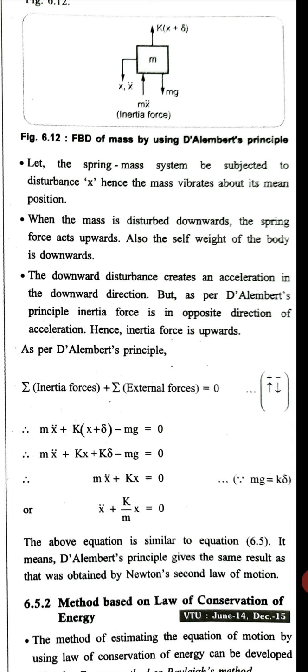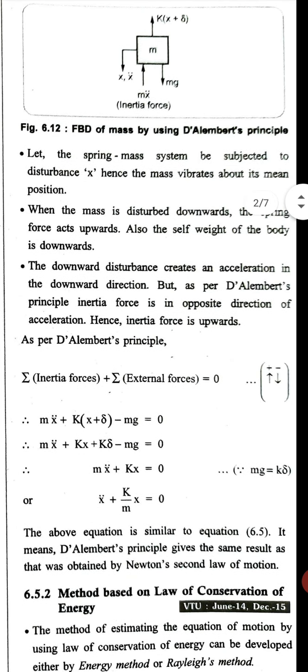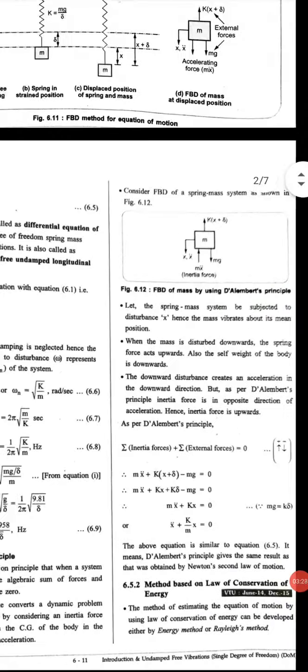Simplifying: mx double dot plus kx plus k delta minus mg equals zero. Since we know that mg equals k delta, this becomes mx double dot plus kx equals zero. This equation is similar to equation 6.5, meaning D'Alembert's principle gives the same result as obtained by Newton's second law of motion.